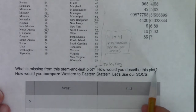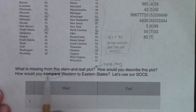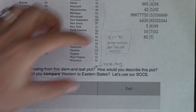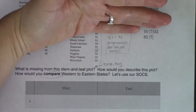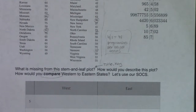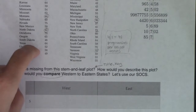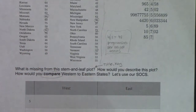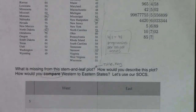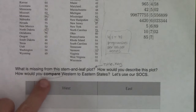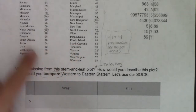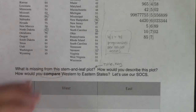When I ask 'how would you describe this plot' and 'how would you compare western to eastern states,' if you have comparative graphs — whether a back-to-back stem and leaf plot or parallel box plots — and I ask you to compare two data sets, you need to do more than just list the SOCs. I will be looking for comparative language: phrases like 'larger than,' 'smaller than,' 'similar to,' 'different from.' Anytime you have two data sets and I ask you to compare, use comparative language.